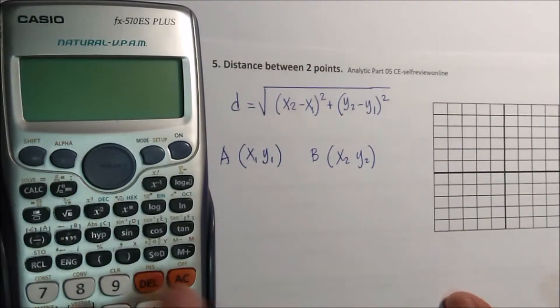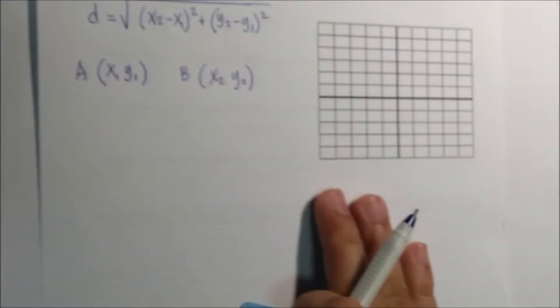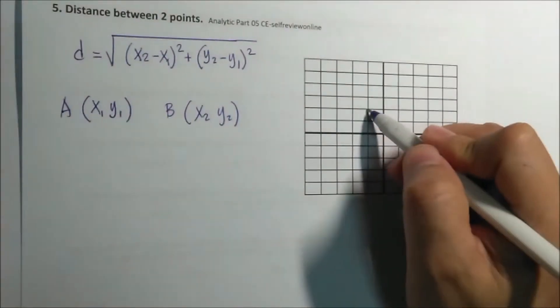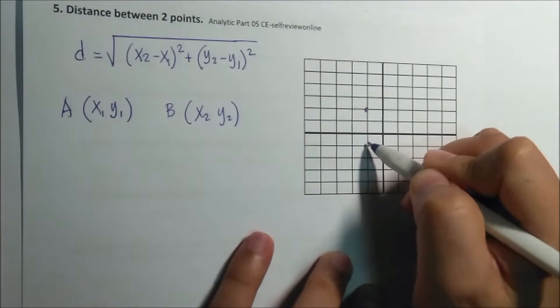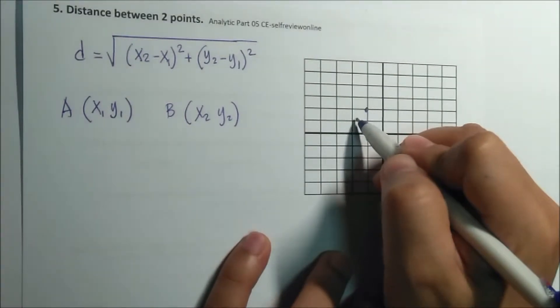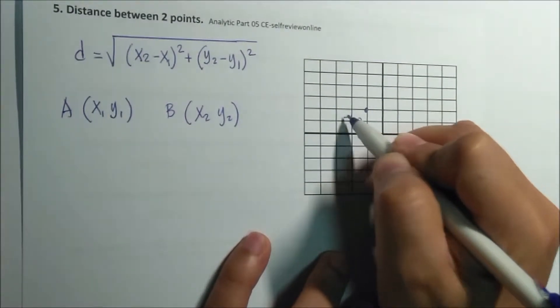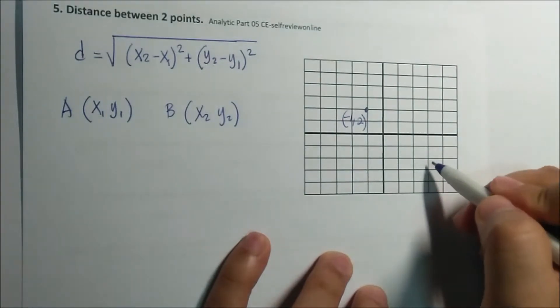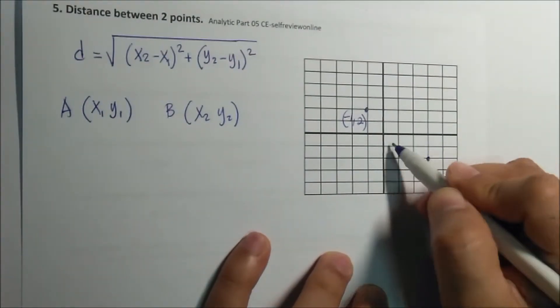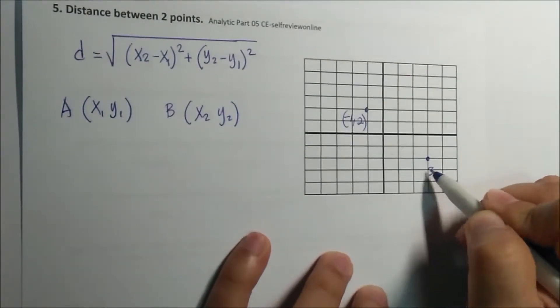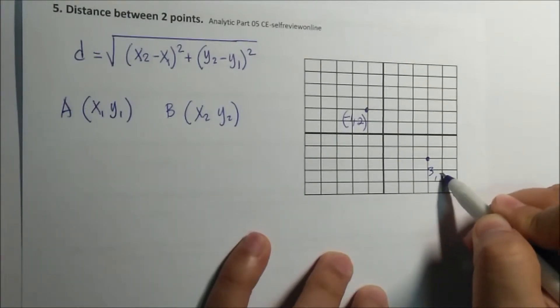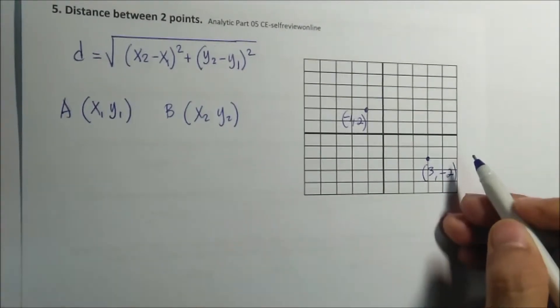Like for example, we have negative 1 and 2, and we have here also 3 and negative 2. What is the distance between them?